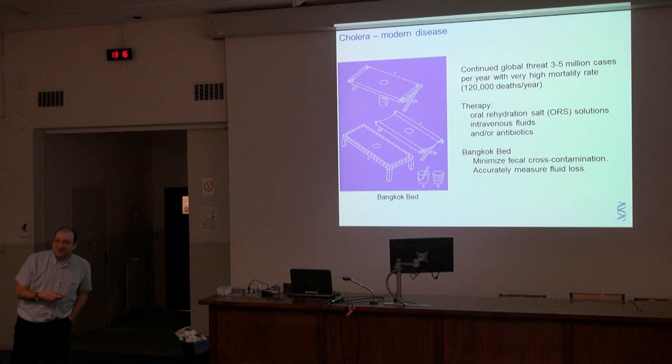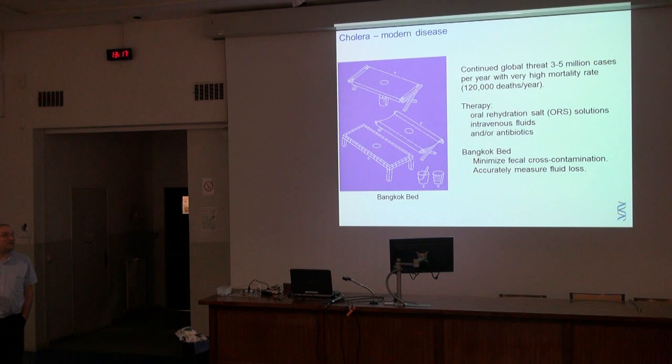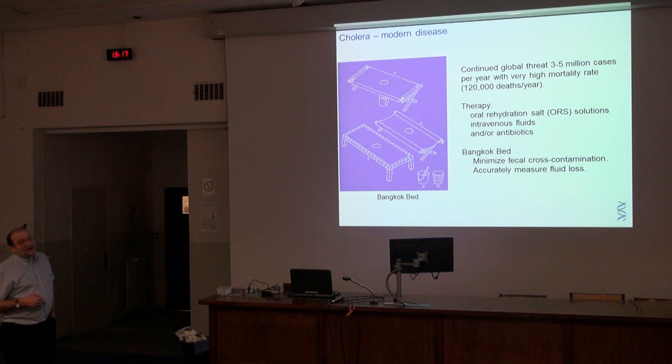But cholera is still a very important disease — 3 to 5 million cases per year with a high mortality rate, which is extremely frustrating because cholera is very easy to treat. You don't need to die of cholera. You just need oral rehydration with salt and sugar solution, intravenous fluids, and antibiotics. One of the most effective interventions is the Bangkok bed — effectively a tarpaulin with a hole in the middle over a bucket — which means the patient doesn't have to move around and spread the disease, and you can accurately measure fluid loss to rehydrate correctly.